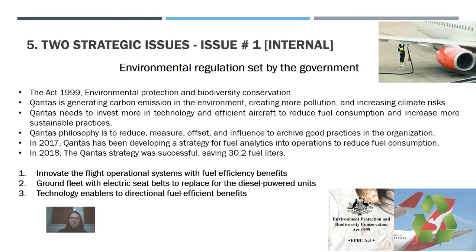The first strategic issue is environmental regulations as advised by the government — specifically the 1999 Environmental Protection and Biodiversity Conservation Act. Qantas is generating carbon emissions, creating more pollution and increasing climate risk. Qantas needs to invest more in technology and efficient aircraft to reduce fuel consumption and increase sustainable practices. In 2017, Qantas developed a strategy for fuel analysis to reduce consumption, and in 2018 the strategy was successful, saving 3.02 million fuel liters.